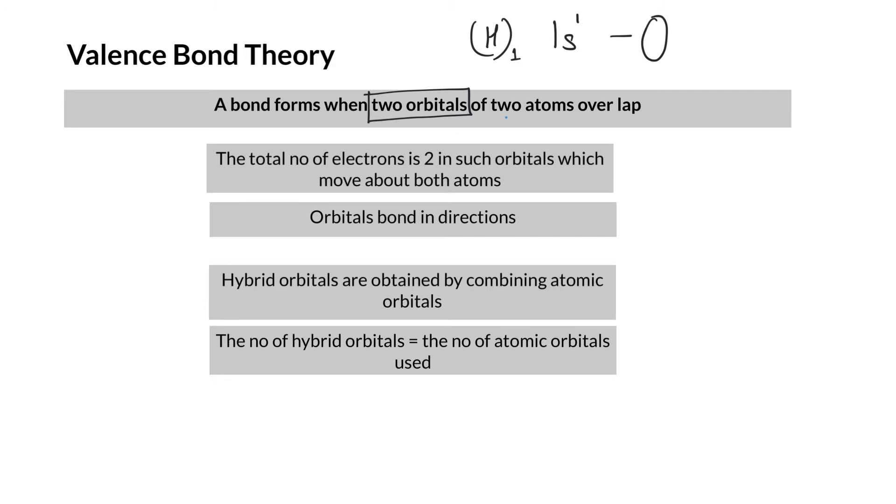These spherical atoms are going to overlap. By overlapping, a bond is formed. Obviously, the better the overlap, the strength of this bond is directly proportional to how good the overlap is.